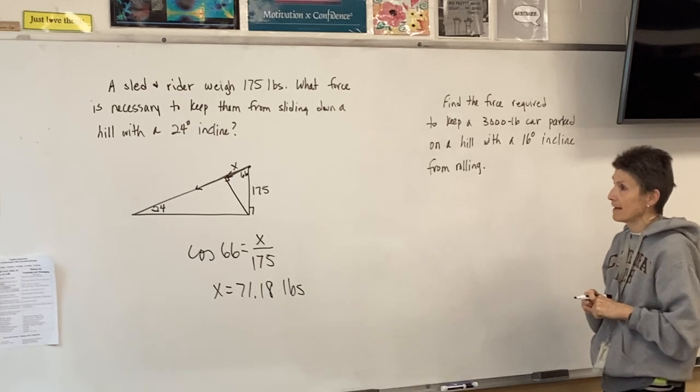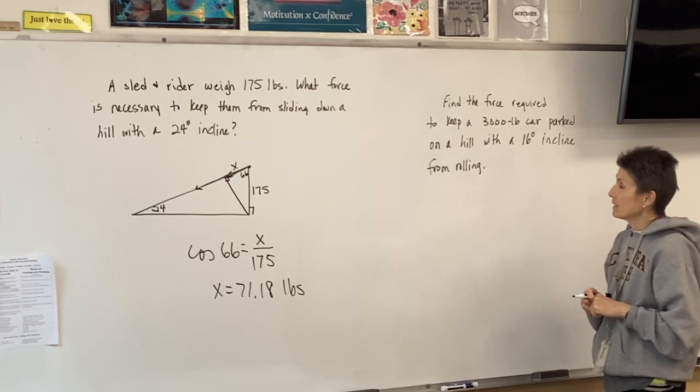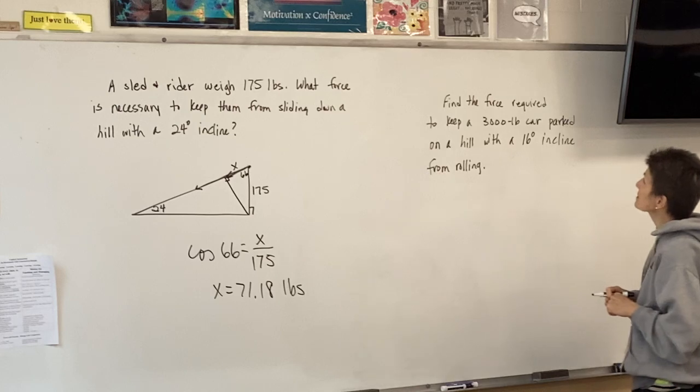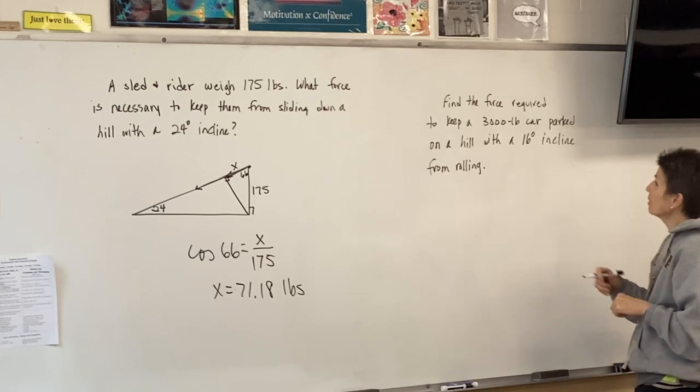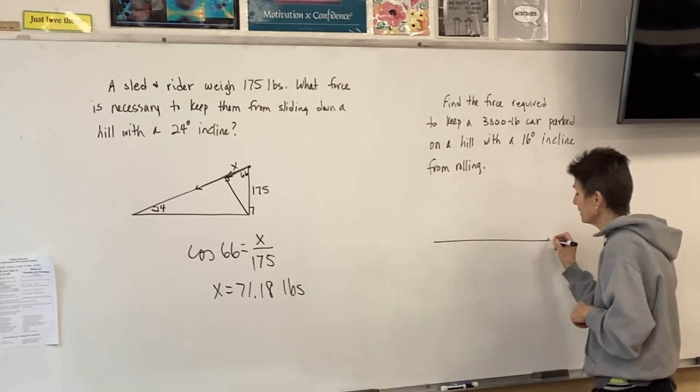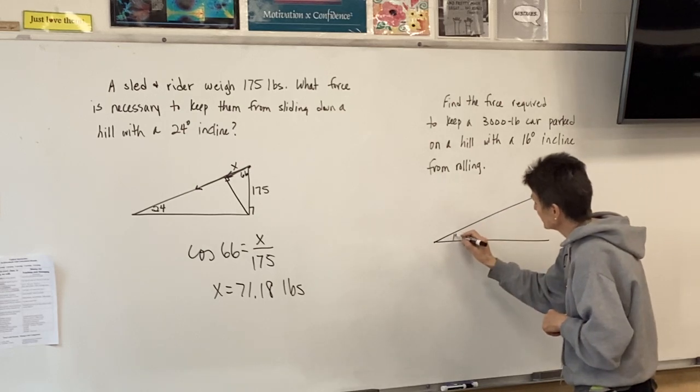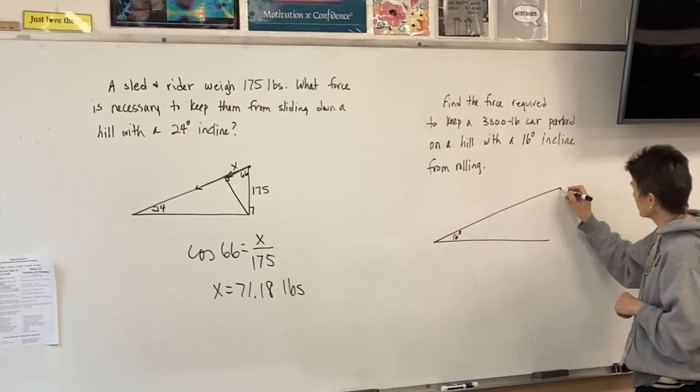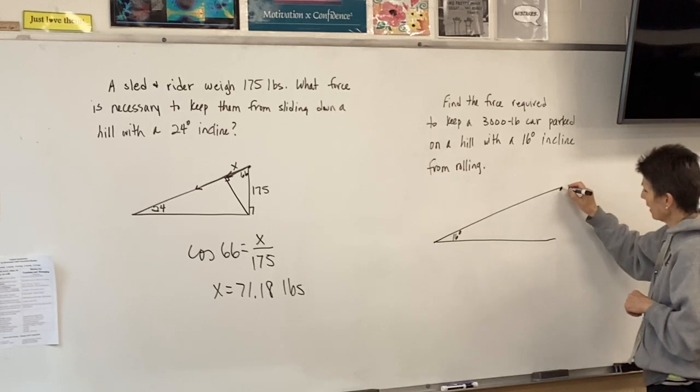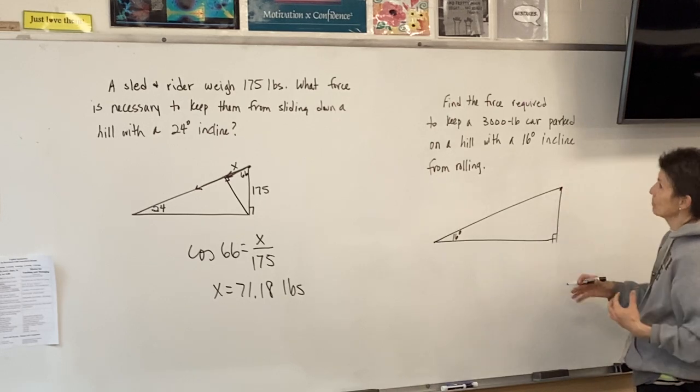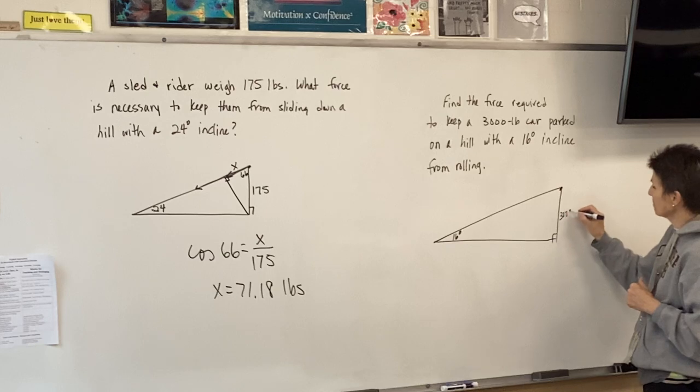Okay, what about this? Find the force required to keep a car, so now we've got a car parked on a hill, and there's a 16-degree incline this time. Here's the car parked on a hill. Obviously nature's pulling him straight down with a force of 3,000 pounds, gravity.